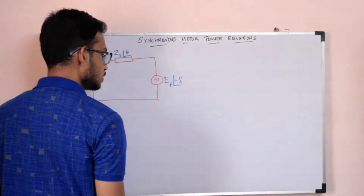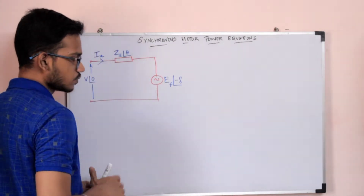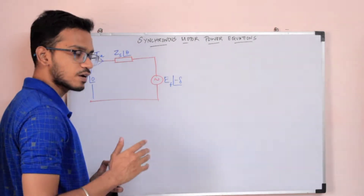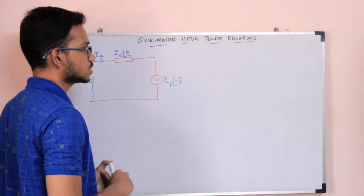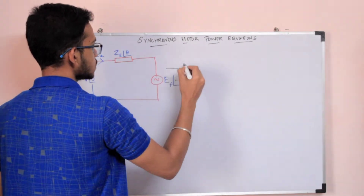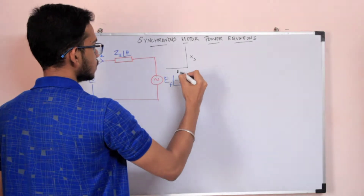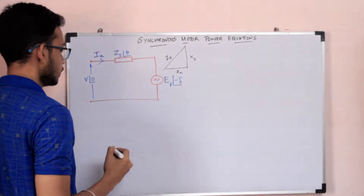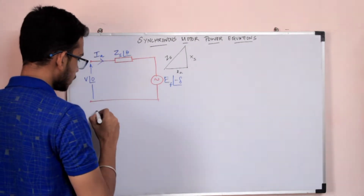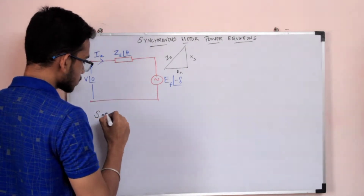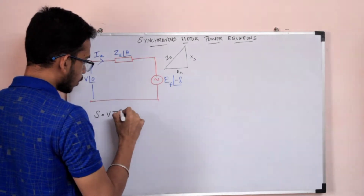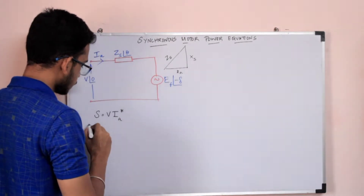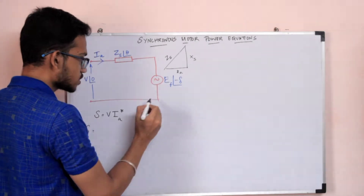We've already seen that there is an impedance in the synchronous machine — it is usually an RL combination. There is a resistance RA and a synchronous reactance XS. These two give a vectorial sum: synchronous impedance Z. Now we will derive the power equation. Let's write the complex power equation.